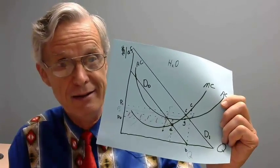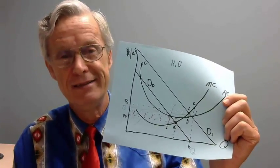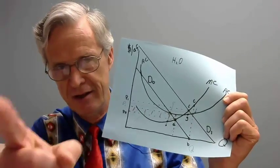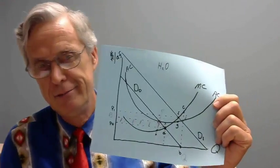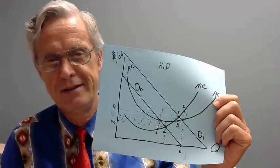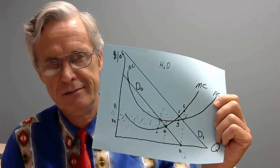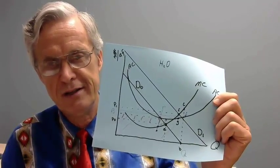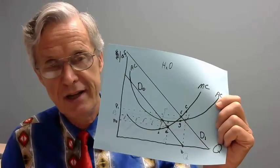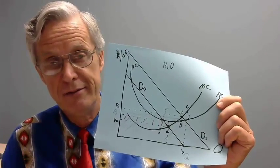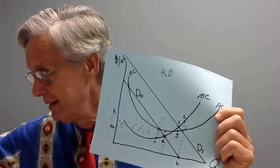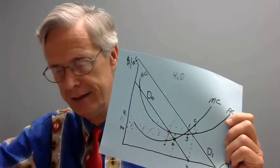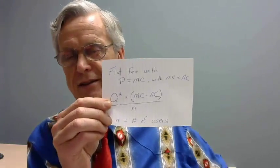So how do we sustain efficient pricing in the face of marginal cost being below average cost? A flat fee. This is the one case — with marginal cost being below average cost and price equals marginal cost — this is the one case where you do want to use a flat fee, where it's efficient to do that. How big should your flat fee be? It should be big enough to cover that red area.